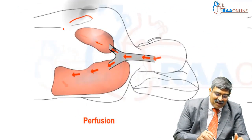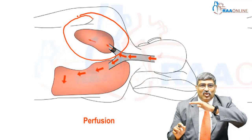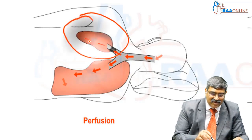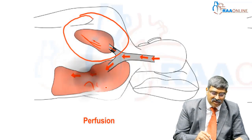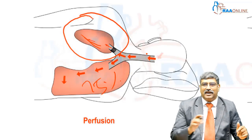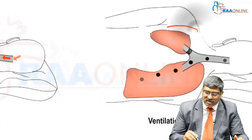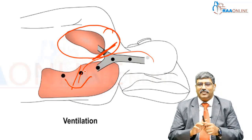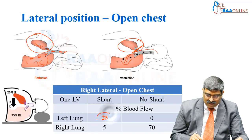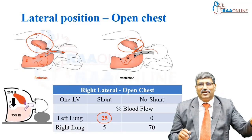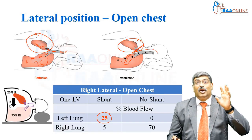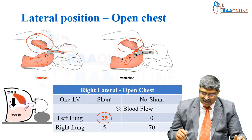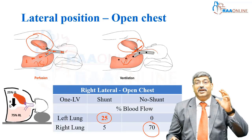Now coming to lateral position with open chest. Here the non-dependent lung ventilation is totally cut off, but it still receives some blood flow. About 75 percent of perfusion goes to the dependent right lung. Ventilation is entirely cut off to the non-dependent lung — all ventilation goes to the dependent right lung. Physiologically, the left lung has only blood flow and no ventilation at all, contributing about 25 percent shunt.